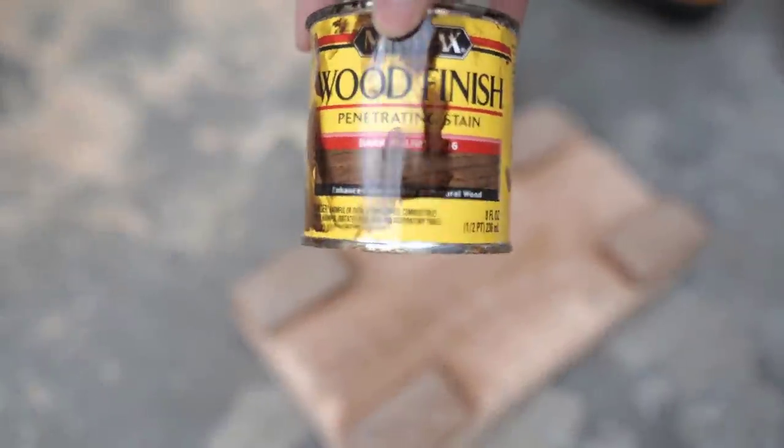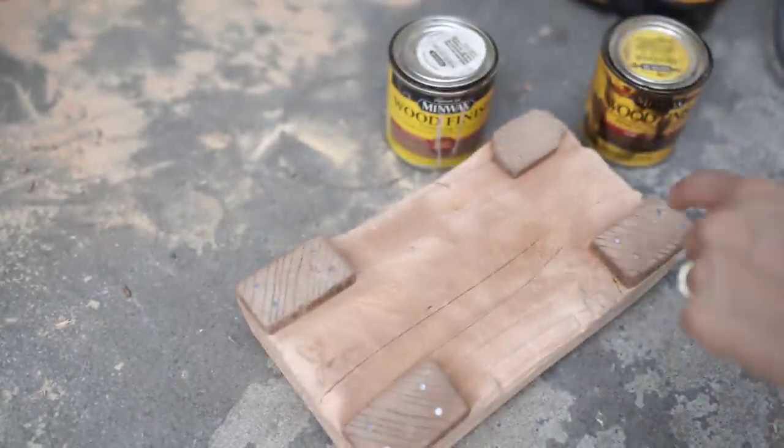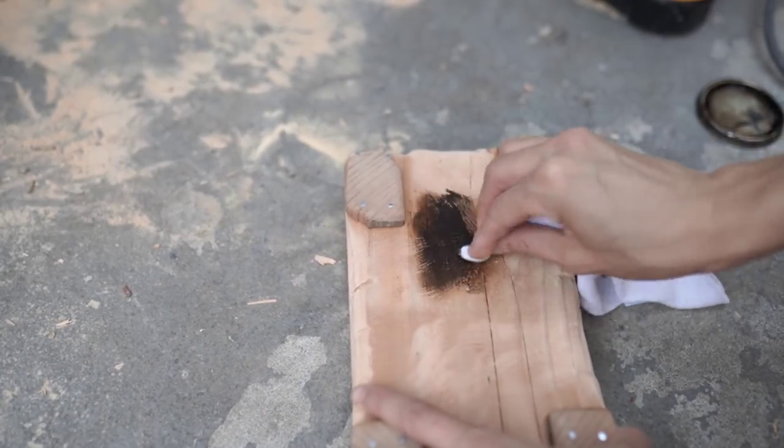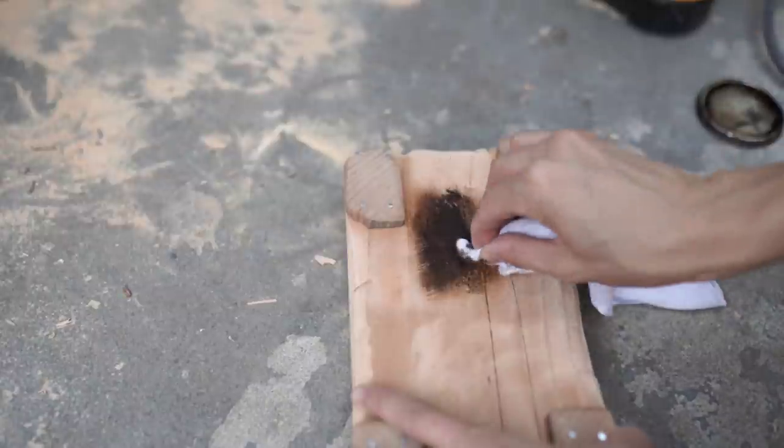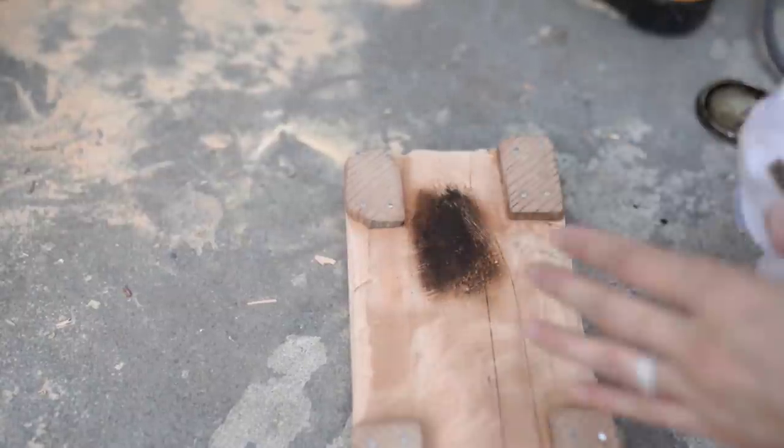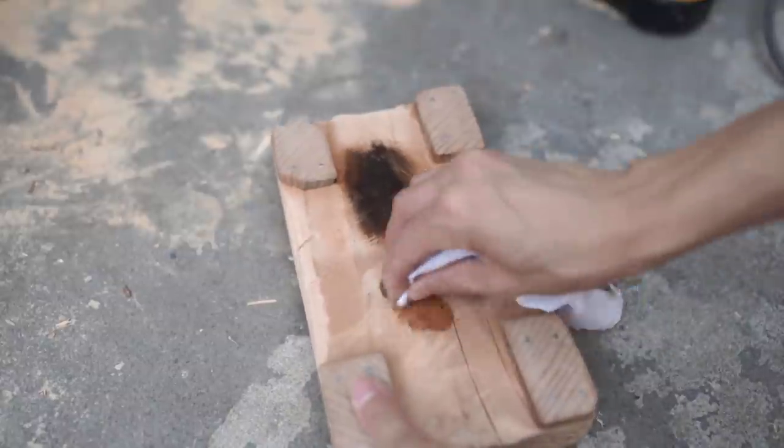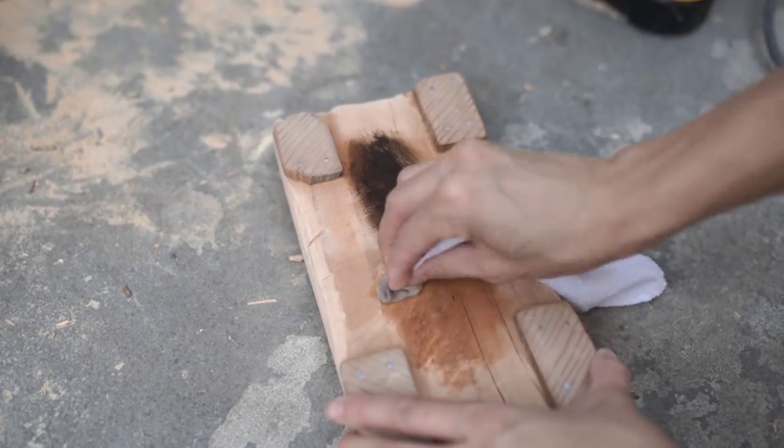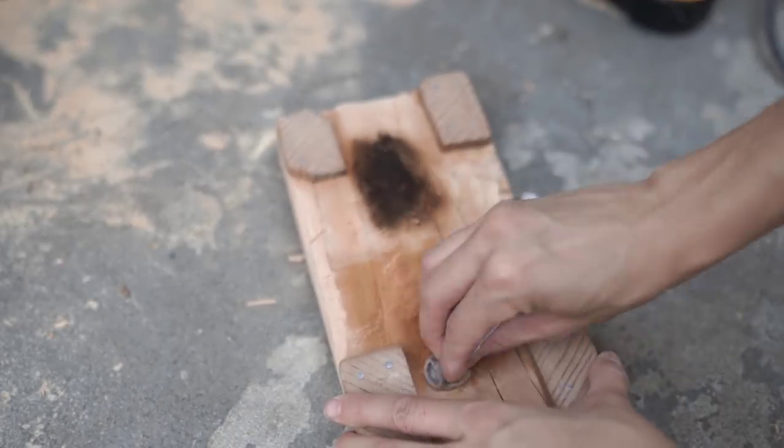These are kind of my go-to stains, dark walnut and weathered oak. I'm going to try both of them on and see which one I like better. The dark walnut is really dark. It's very pretty, but if that's not what you're looking for, definitely try the weathered oak. This one pulled a little bit of yellow, so I'll tell you how I got rid of that.